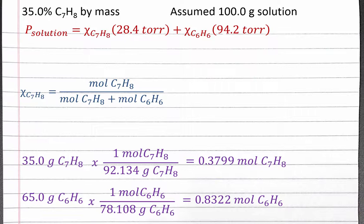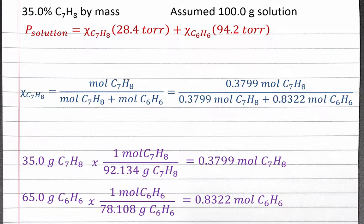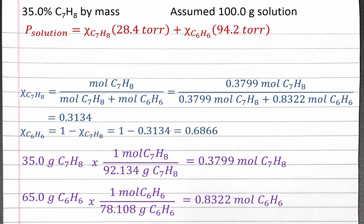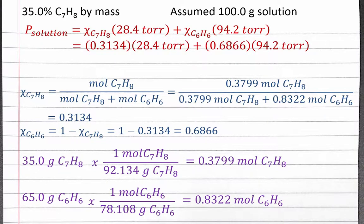Now we can plug these numbers into our equation and solve for the mole fraction of toluene. Completing the calculation, we get 0.3134. To find the mole fraction of benzene, we take 1 minus the mole fraction of toluene, and we get 0.6866. We can plug these mole fractions into our equation for the vapor pressure of the solution. Completing this calculation, we get a vapor pressure of 73.6 torr.